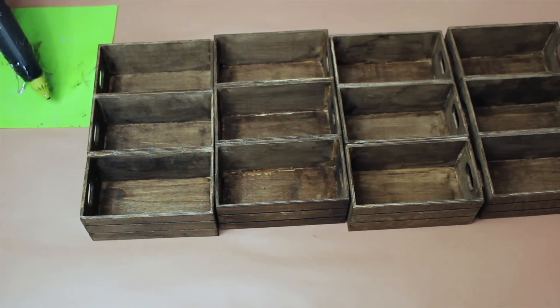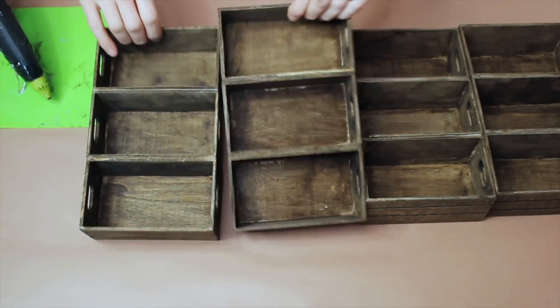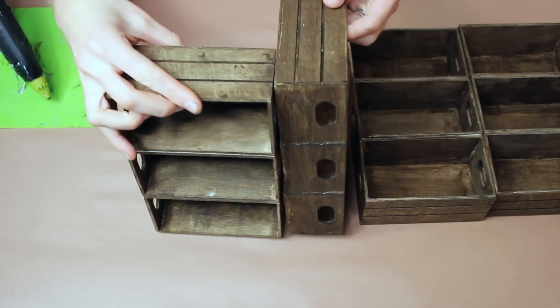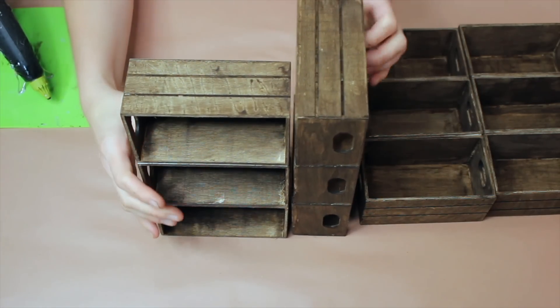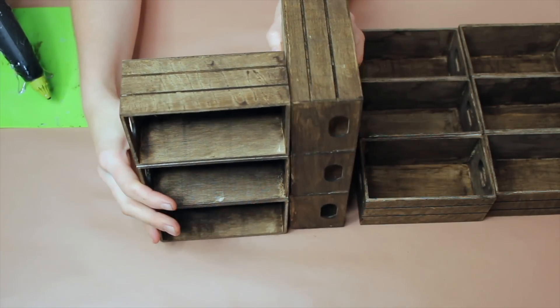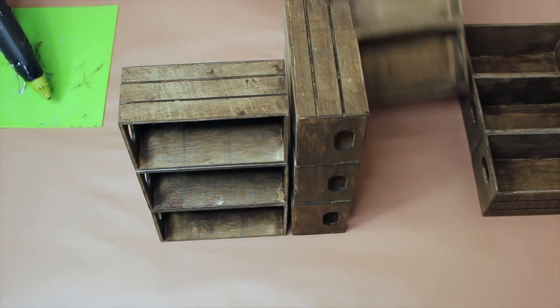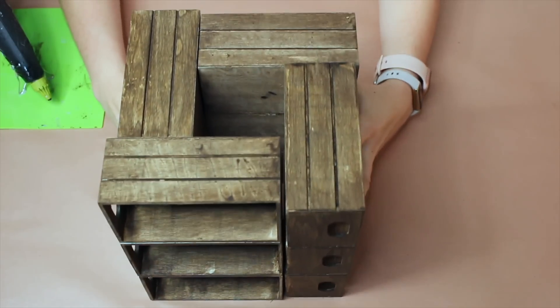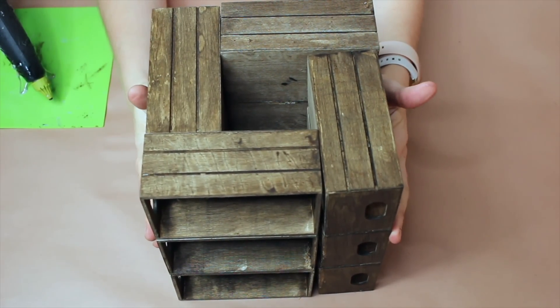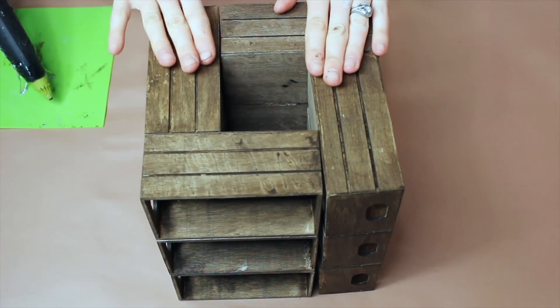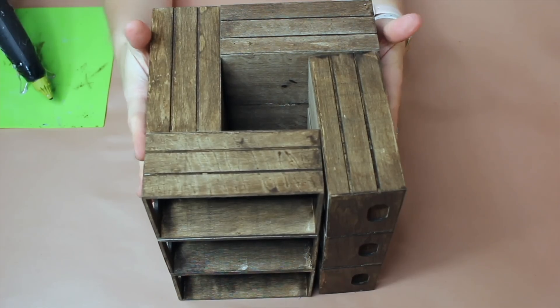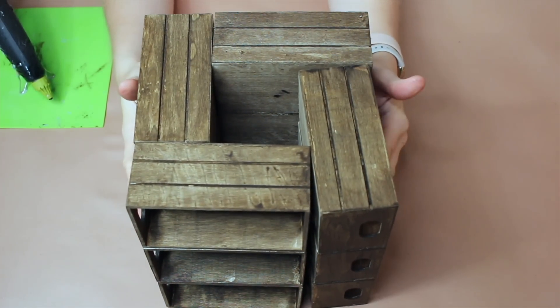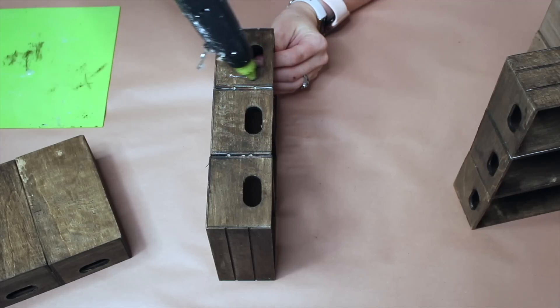Alright, so what we're going to do now is we're going to put this into a formation where we are going to be lining them up next to one another. So first I just kind of want to illustrate what it's going to look like. Essentially we're going to be gluing these all together and it's really important that you wait for the stain to dry before you move on to the gluing step.